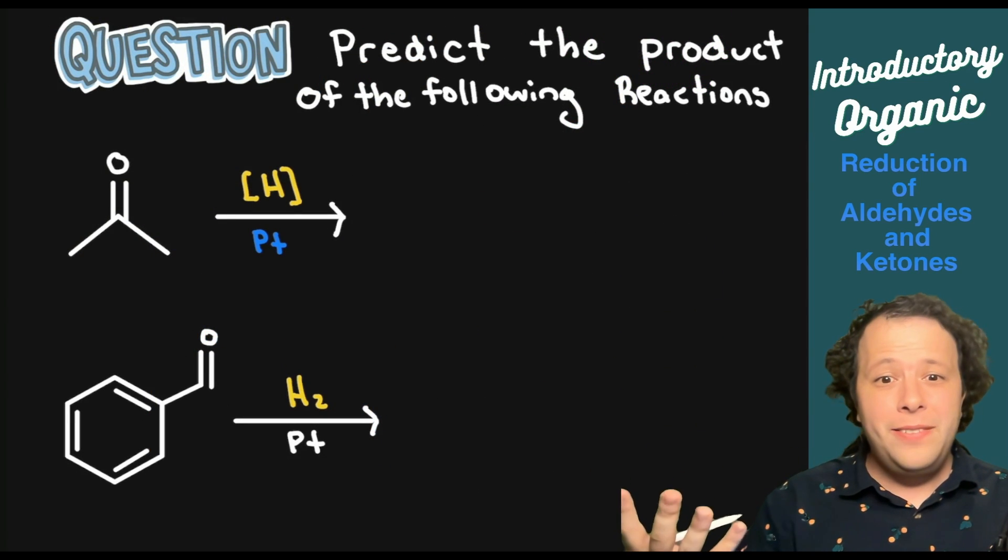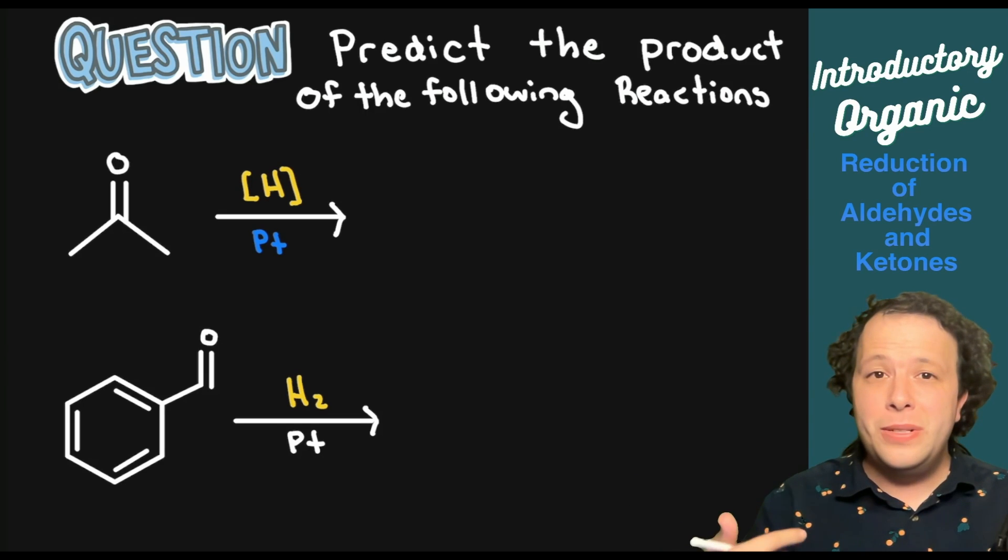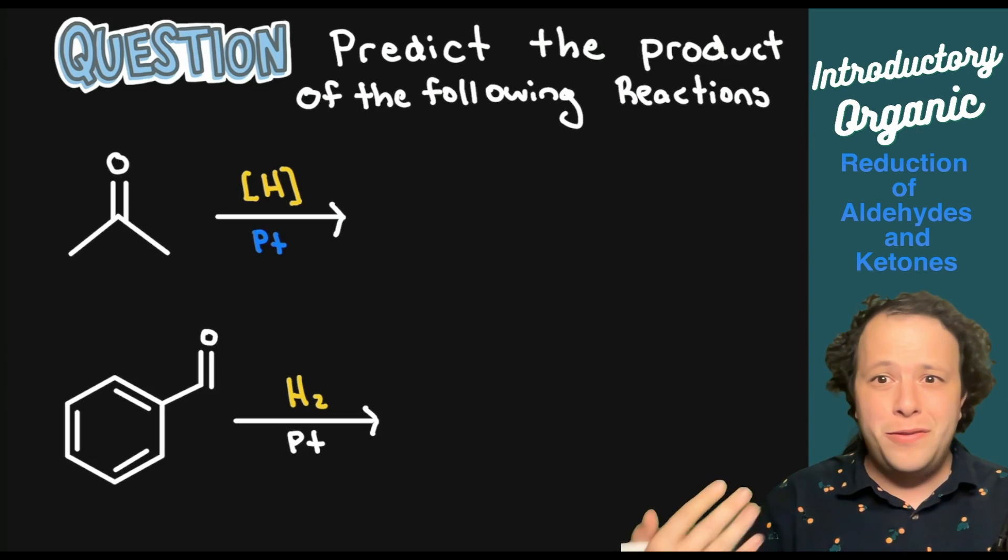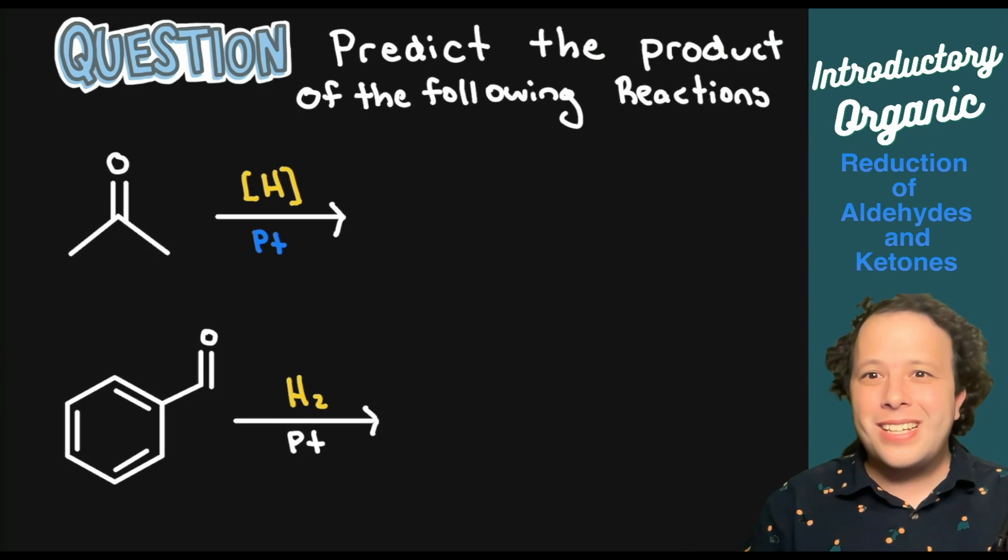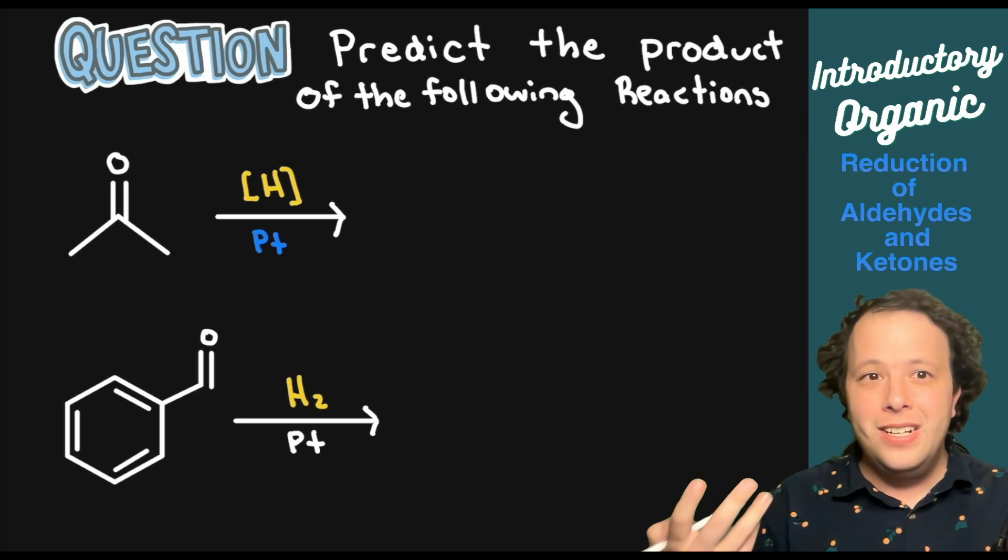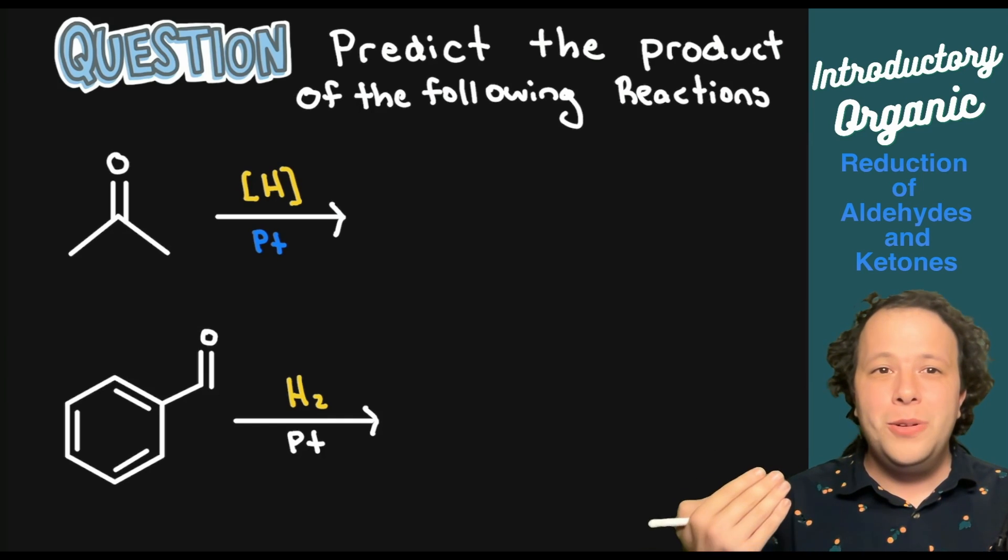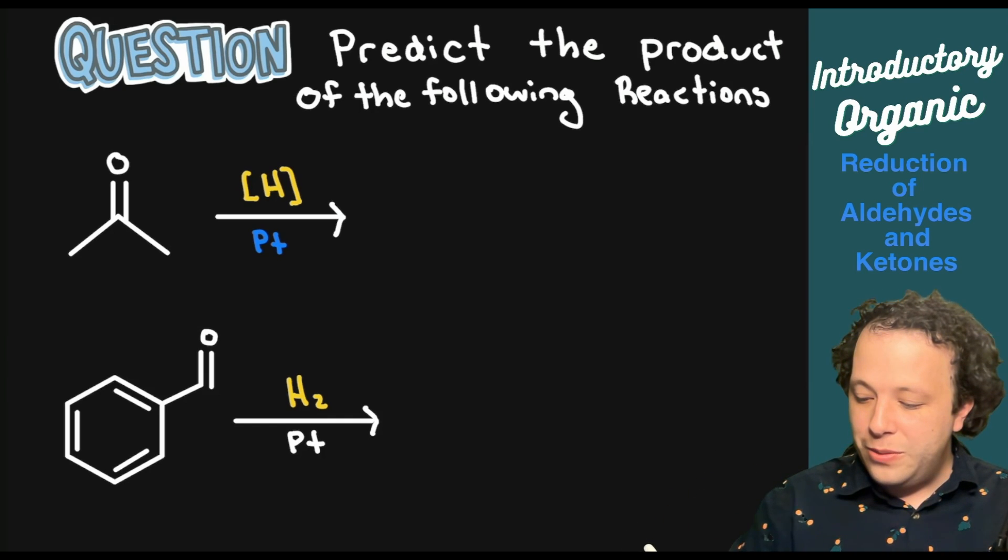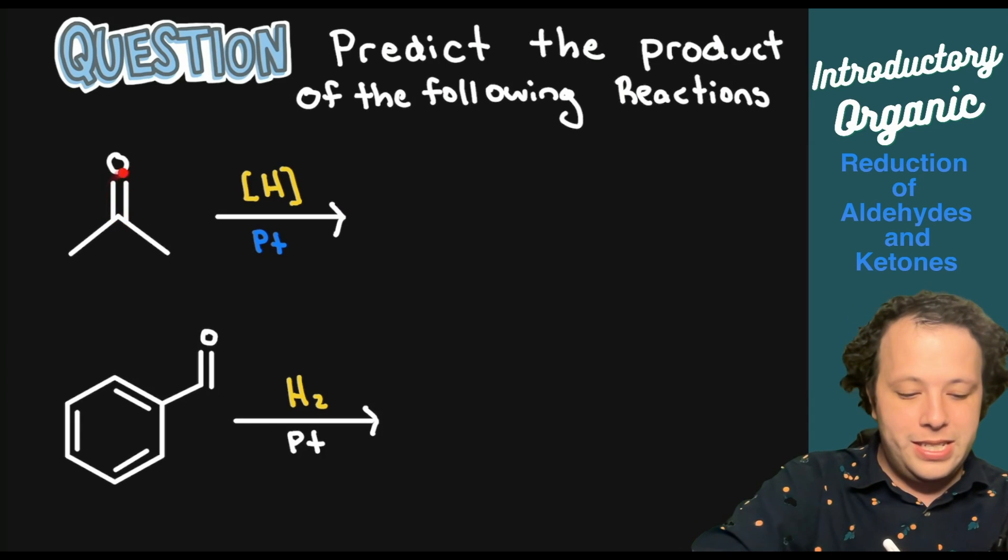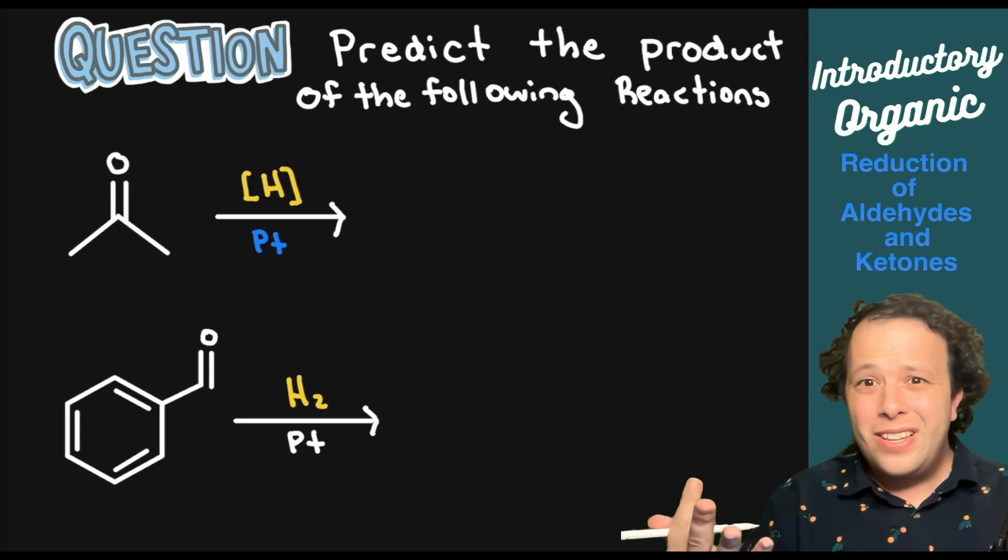In a lot of your chemistry classes, you'll be asked to predict the products of the following reaction, which is a common exam, quiz, or homework problem in introductory organic chemistry. For this first one, we need to identify what is our functional group so we know what to expect.